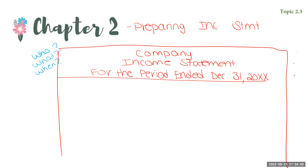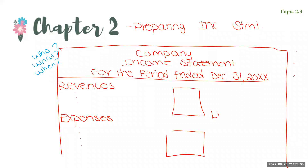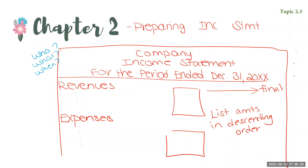The income statement contains the items that determine income, which are revenue and expenses. You would list all of the different revenues and all of the different expenses, along with their dollar amounts in descending order — so your largest amount comes first. Your final figures, your final sums, move out to the right-hand column. These are the key formatting guidelines.